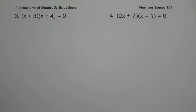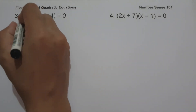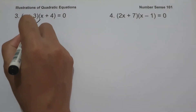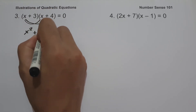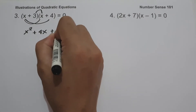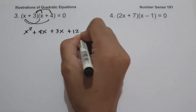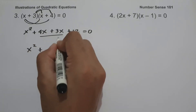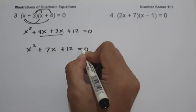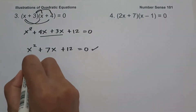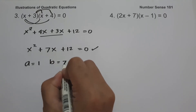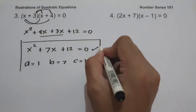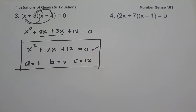On example number three, we have (x plus 3)(x plus 4) equals zero. Multiplying the two binomials: x times x is x squared, x times 4 is 4x, 3 times x is 3x, and 3 times 4 is 12 equals zero. Combining like terms: x squared plus 7x plus 12 equals zero. So a is 1, b is 7, and c is 12.